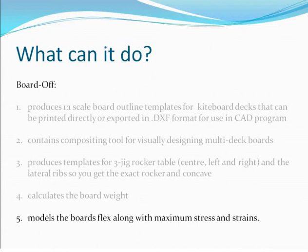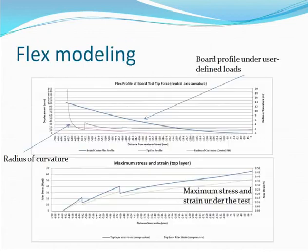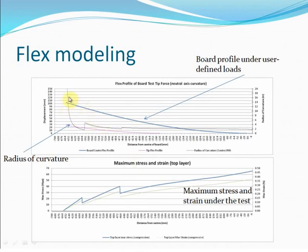Here's an example of the charts you'll see in Board Off in the flex section. This top chart shows the board from side on, how the board will flex when it's under certain loads. In this case the test load — which you can configure in Board Off — is 20 kilos applied just at the tip of the board with the board clamped in the middle. Down in the maximum stress and strain section, it's showing you precisely the maximum stresses and strains in the top layer. There are some discontinuities here because in this design the laminate layers don't each cover 100% of the board — they stop at various places. That was intentional to try and get some additional flex into the tips where it's subject to less stress.